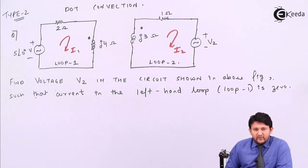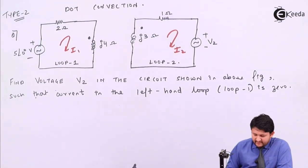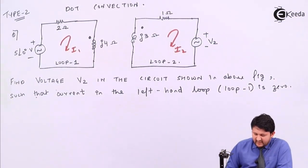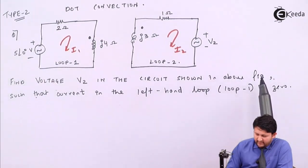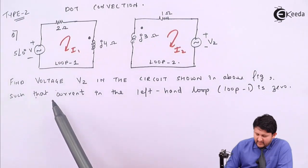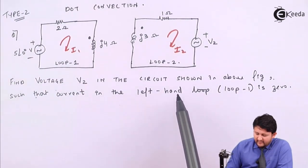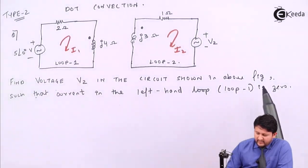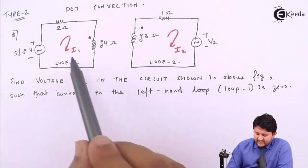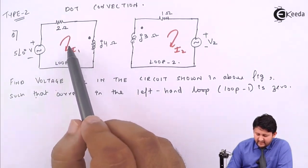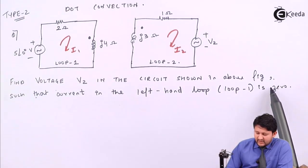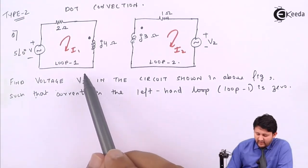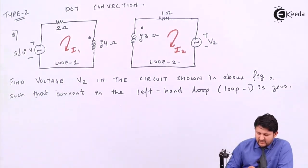Let's look at a Type 2 dot convention problem. The circuit is given and we need to find the voltage V2 such that the current in the left-hand loop is zero. That means I1 = 0. By putting I1 = 0, we need to find the value of V2.